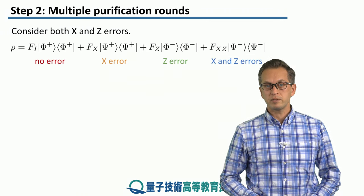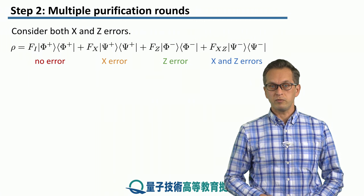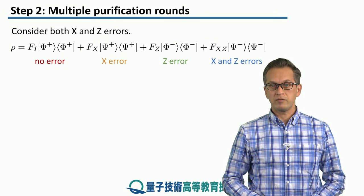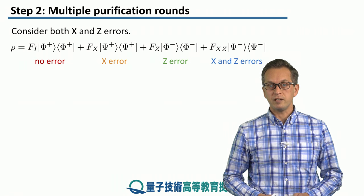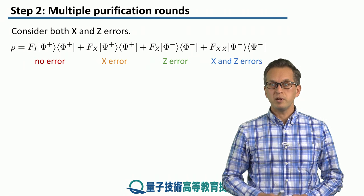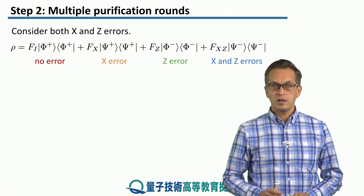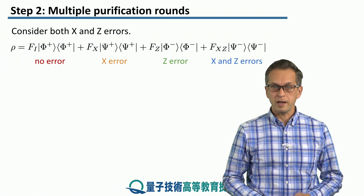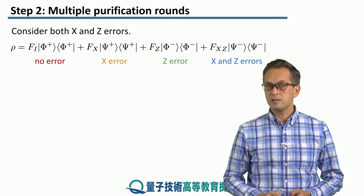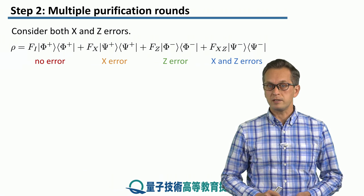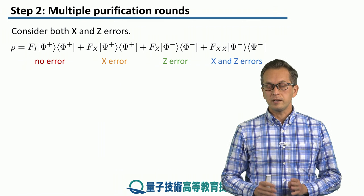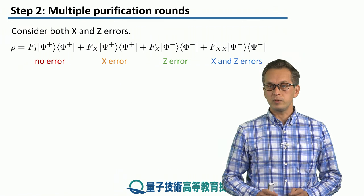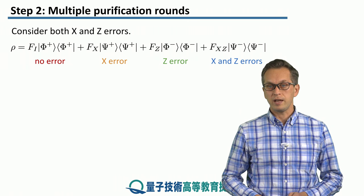When this happens, we can write our state in the following form. We've got our ideal Bell state Phi plus with some fidelity Fi, and then we've got three more terms. Each term represents what happens when the state is affected by an x error, z error, or both x and z errors. These states are weighted by their probabilities Fx, Fz, and Fxz.